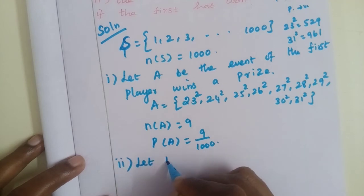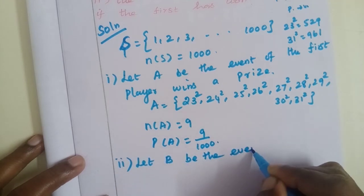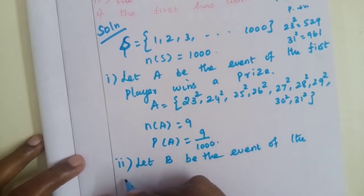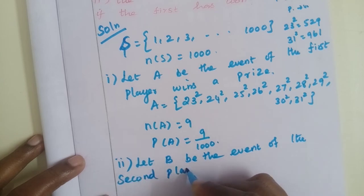Let B be the event that the second player wins a prize.